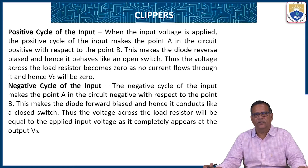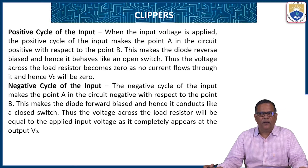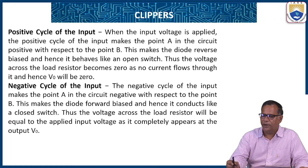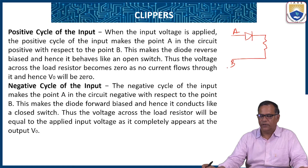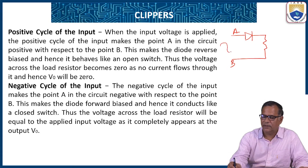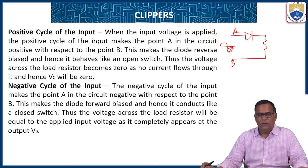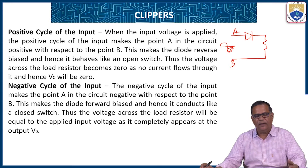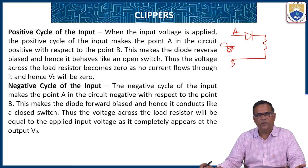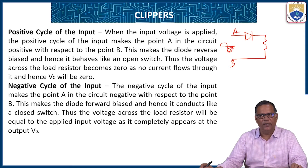During the negative cycle of the input, point A is negative with respect to point B, which makes the diode forward biased and it behaves like a closed switch. Whatever voltage you apply at the input appears across the load resistor.